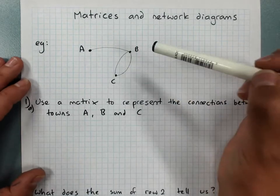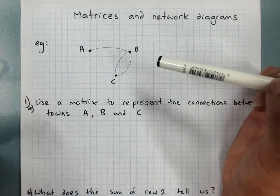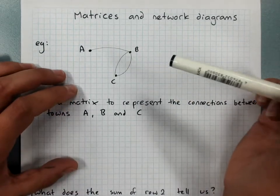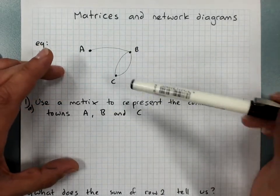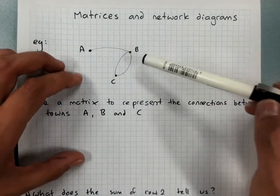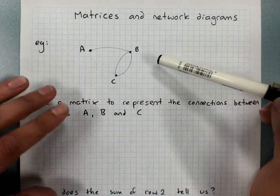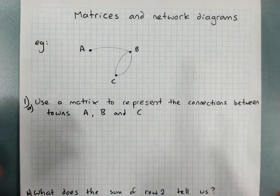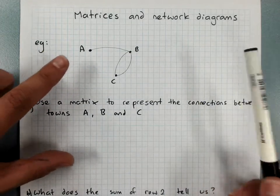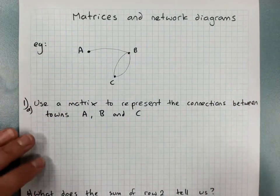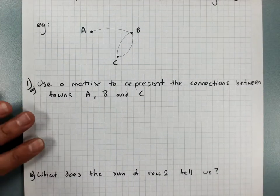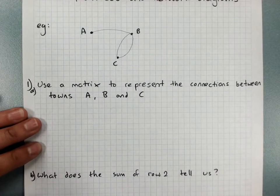They can be used to show connections or relationships. They're often used to show connections between towns, or people who have met, friendship networks, connections for utilities, that sort of thing. So this one is showing connections between towns, so roads. Use a matrix to represent the connections between towns A, B and C.